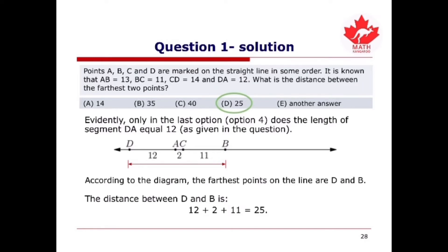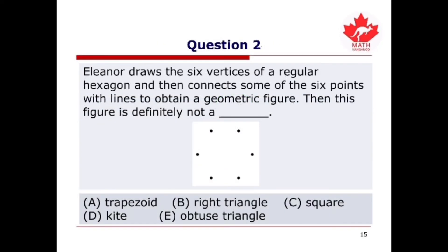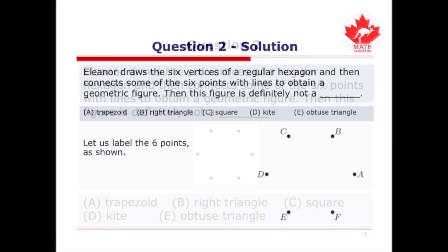We are now ready for the next question. Question 2 asks: Eleanor draws the six vertices of a regular hexagon and then connects some of the six points with lines to obtain a geometric figure. Which figure is definitely not possible? Please pause the video and try to solve this problem on your own before watching the solution.